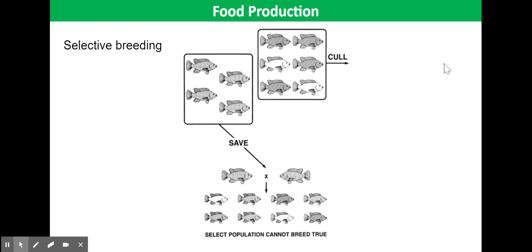So what we have seen in this video tutorial is there are a large number of reasons why fish farms are advantageous and preferred methods of fishing over wild fishing methods.